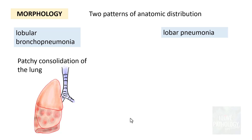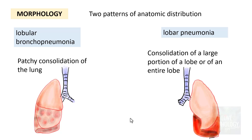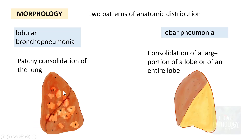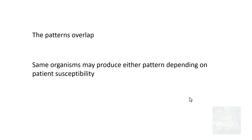In lobular or bronchopneumonia, the consolidation is patchy — it can involve the entire lung or is usually in the basal lobes. In lobar pneumonia, consolidation involves a large portion of a lobe or the entire lobe. Remember, it is not a hard-and-fast rule that any pneumonia produces only one of these patterns, as the patterns can overlap. Initially it can begin as lobular, then progress to affect the entire lobe. The same organisms can produce either pattern depending on the susceptibility of the patient; extremes of age are more prone to bronchopneumonia.